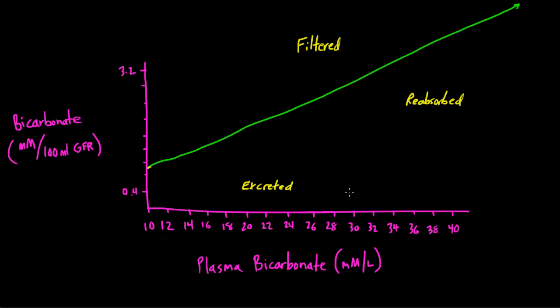So one thing worth noting about proximal tubular bicarbonate reabsorption is that it exhibits a threshold effect. And this graph represents an experiment where normal subjects were given acid, so they were made acidotic, and their plasma bicarbonate was reduced to about 12 or 14. Then they were slowly given back sodium bicarbonate, and they calculated the amount of filtered bicarbonate over time as this number increased. What was interesting is that as long as the bicarb was low, the kidney would reabsorb all of the filtered bicarbonate. That's what I'm drawing here, the reabsorbed line.